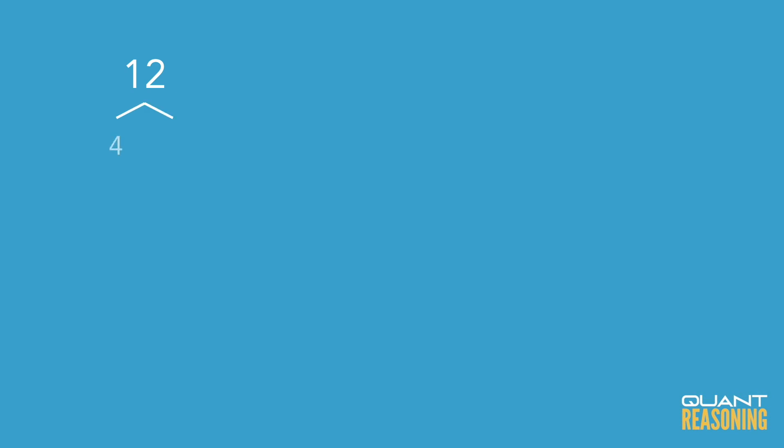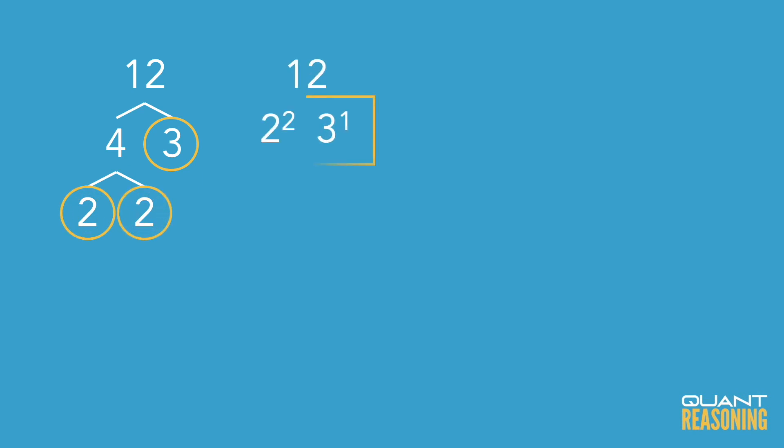Now we can get started. What we're going to do is prime boxing — that means we're going to find the prime box of different numbers. If you're not sure what a prime box is, it's just a box that contains the prime numbers of a certain number. For example, 12 is 4 times 3. 3 is a prime number, 4 isn't, so we have to break that down further to 2 times 2. So the prime box of 12 would have 2 squared times 3 to the 1.